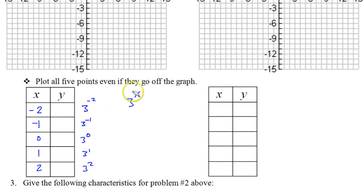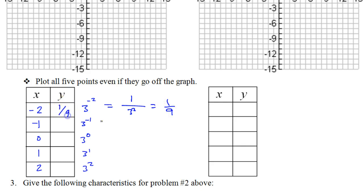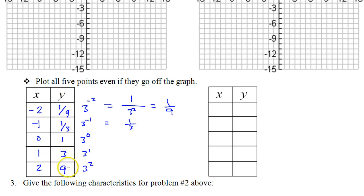3 to the negative 2 power is 1 over 3 squared, so that's 1 over 9. 3 to the negative 1 power is 1 over 3. Anything to the 0 power is 1. 3 to the 1 power is 3. And 3 squared is 9. Notice how the top 2 and the bottom 2 are just reciprocals of each other — that will make your calculations go faster and it's sort of self-checking.